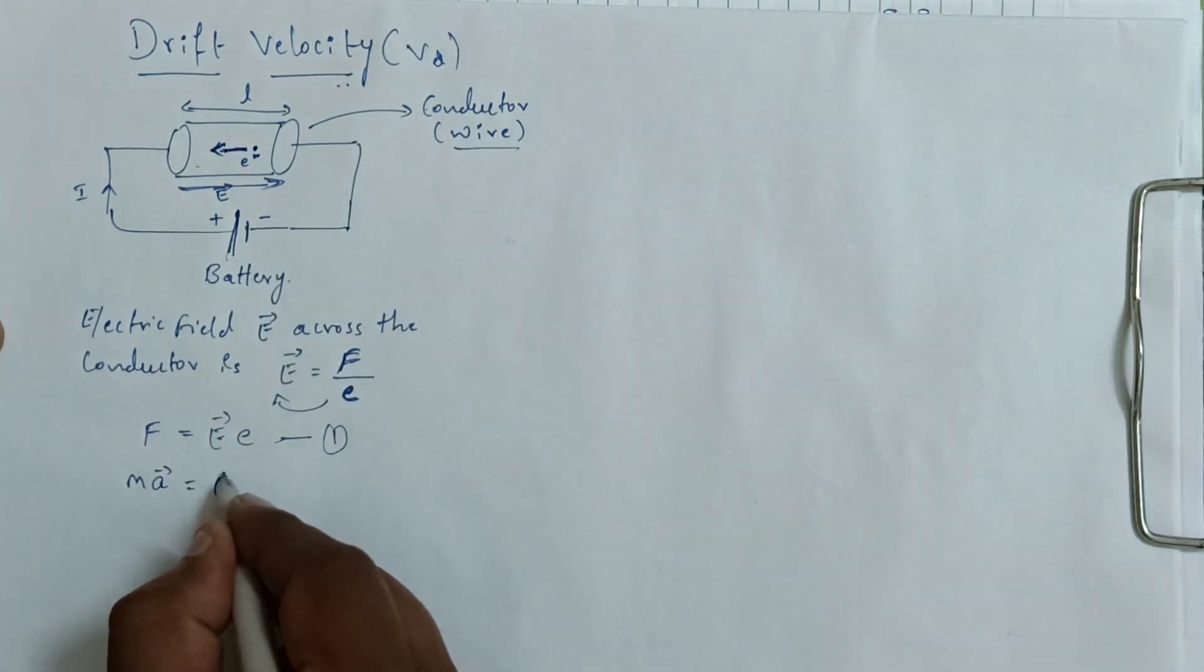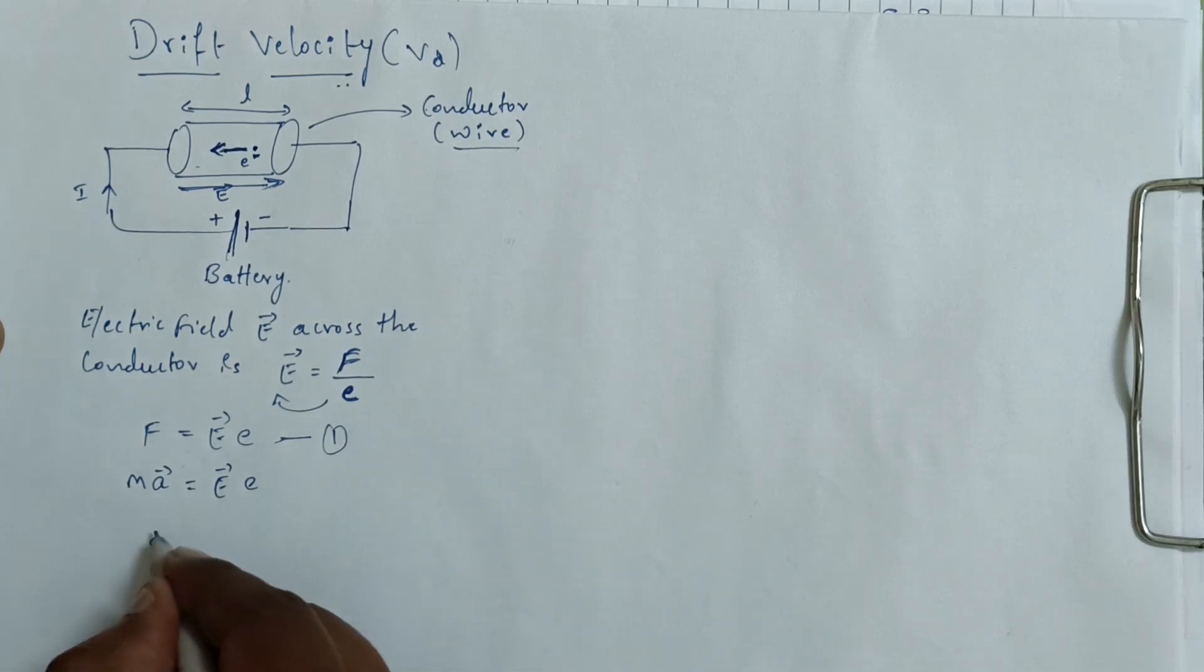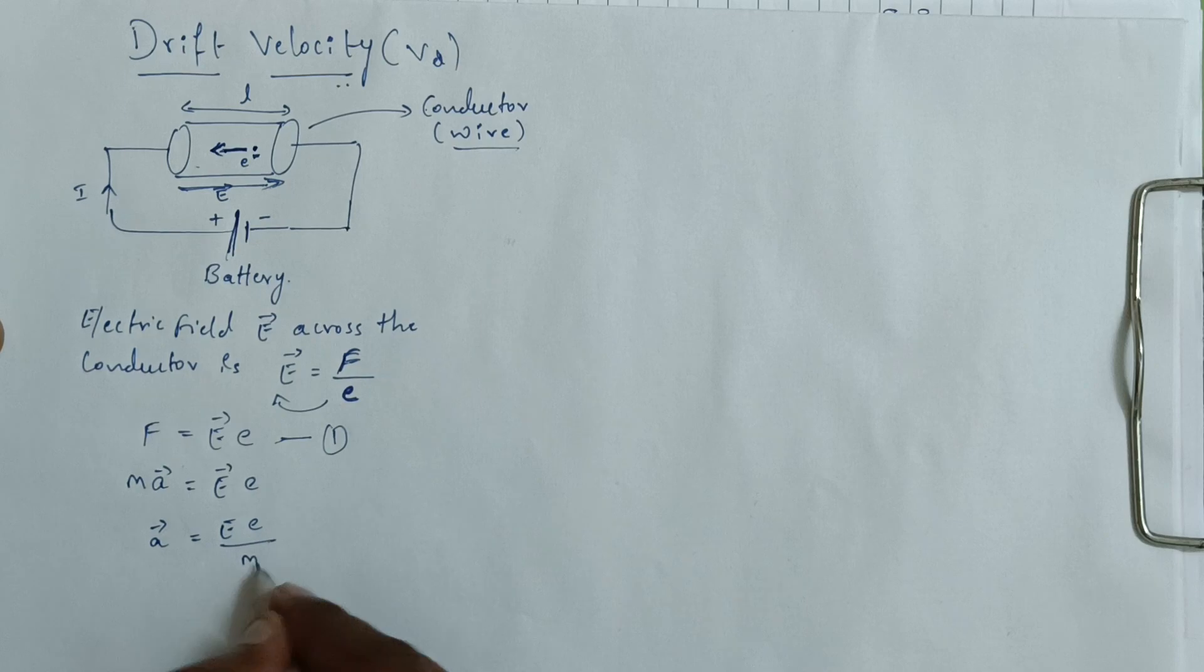This is equal to E into e. From this we can get acceleration equals Ee divided by M. This is equation 2.